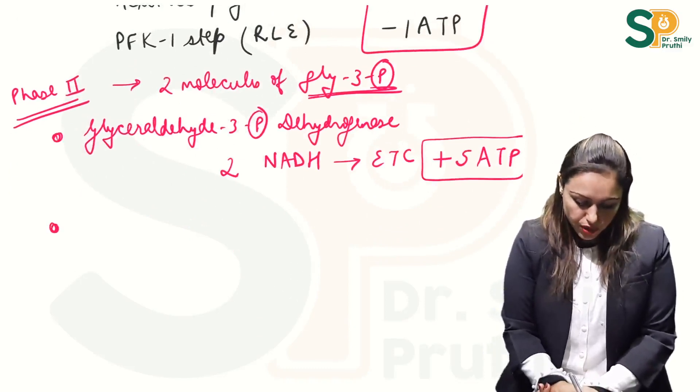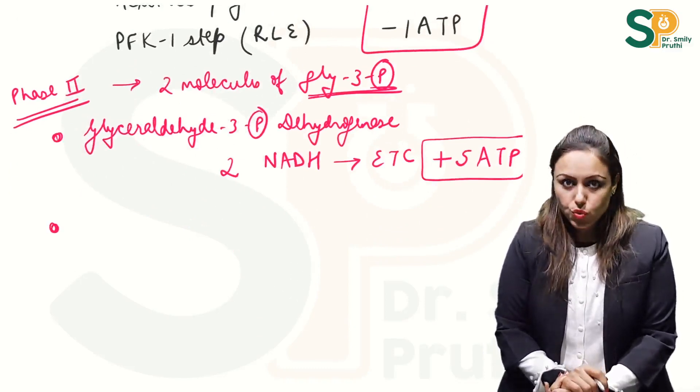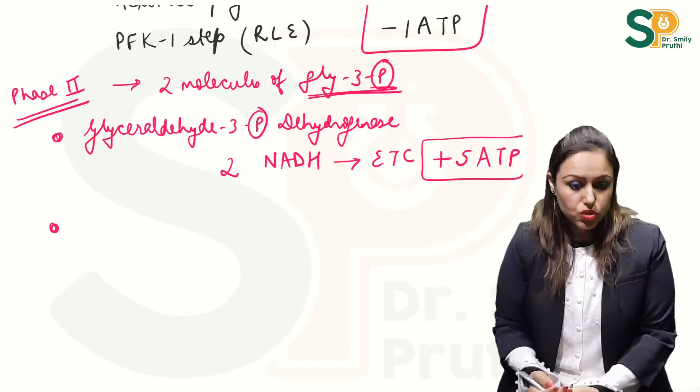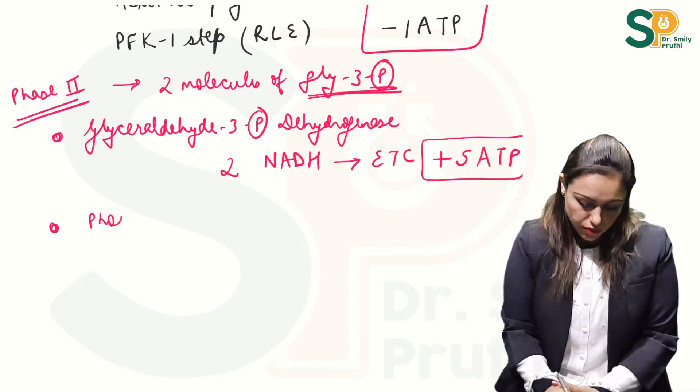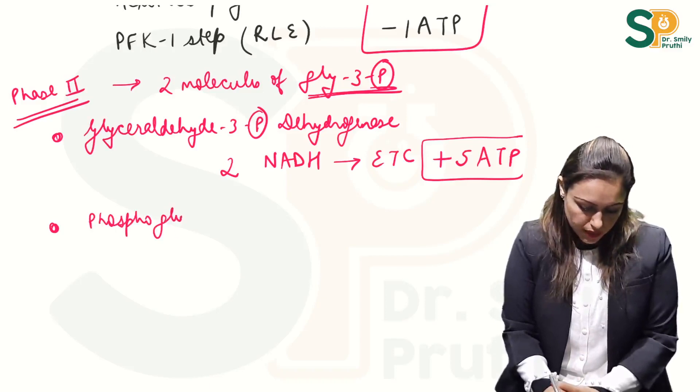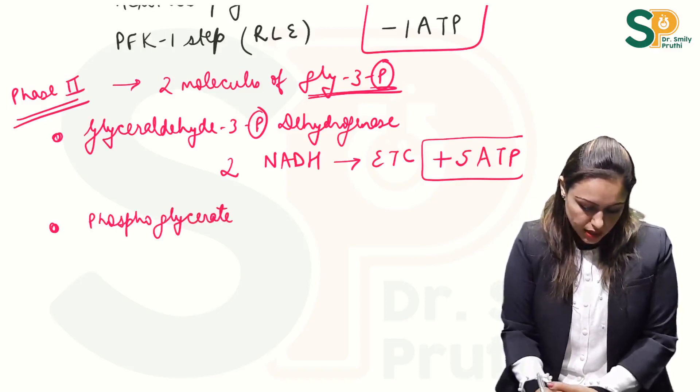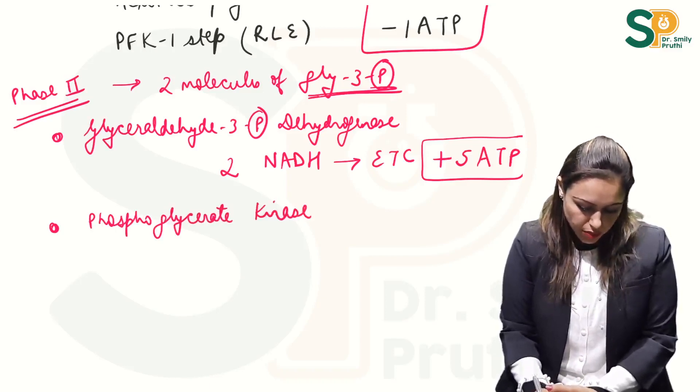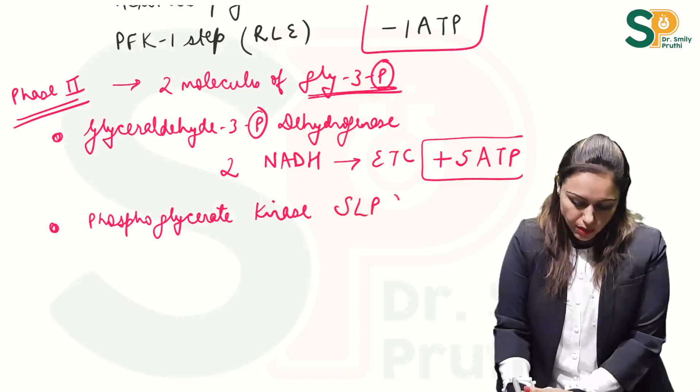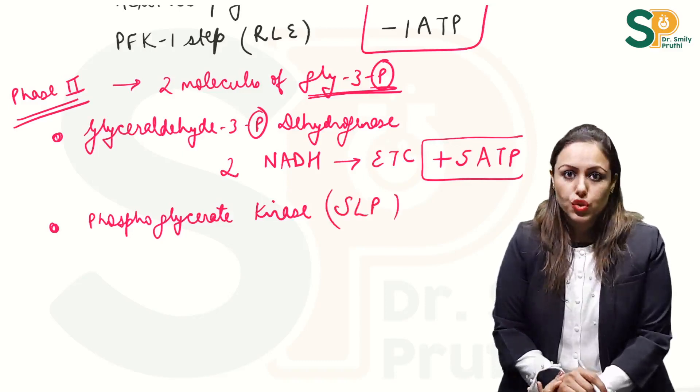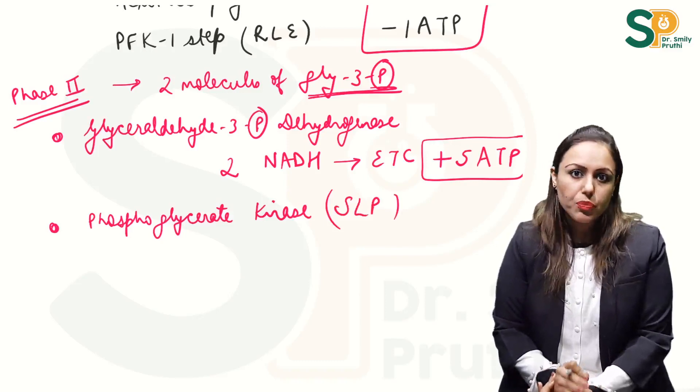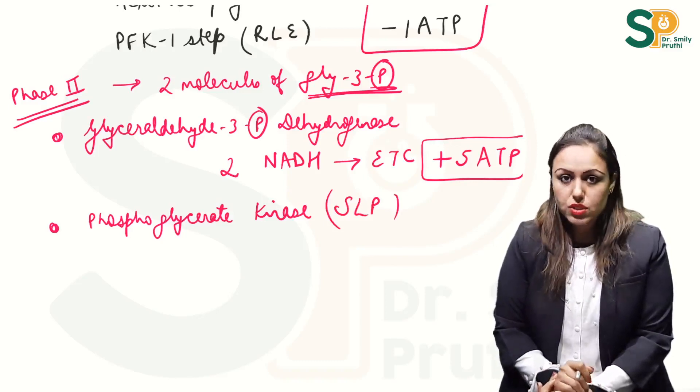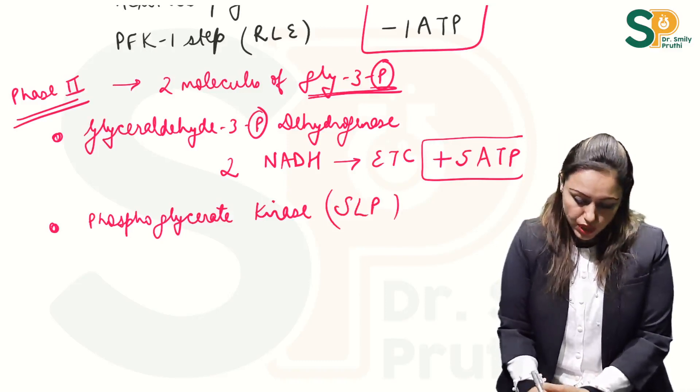This is one of the steps of phase two. Another step of phase two where we are getting energy is phosphoglycerate kinase step and this is carrying substrate level phosphorylation, short form SLP, substrate level phosphorylation step which is producing ATP.